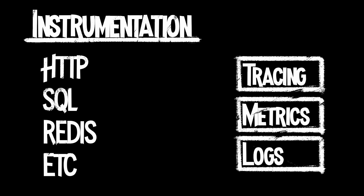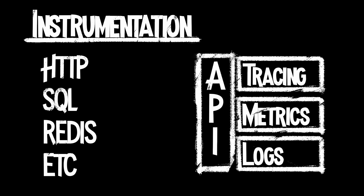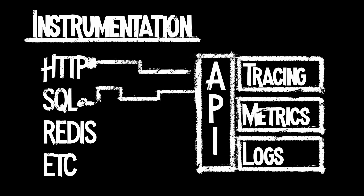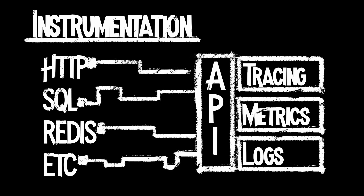We need to have these interfaces in every programming language. In OpenTelemetry, we call this the API. Just know that when you hear OpenTelemetry API, we're talking about application interfaces for writing code and instrumentation, not networking interfaces or other kinds of APIs.